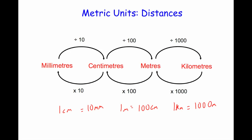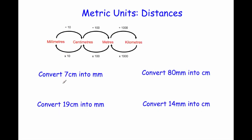Let's have a look at some questions. First question: change 7 centimeters into millimeters. To change from centimeters into millimeters we times by 10. So we do 7 times 10, which equals 70 millimeters. That makes sense because if one centimeter is 10 millimeters, then 7 centimeters would be 70 millimeters.